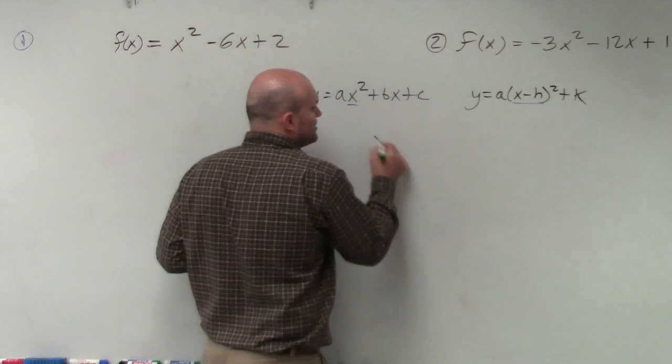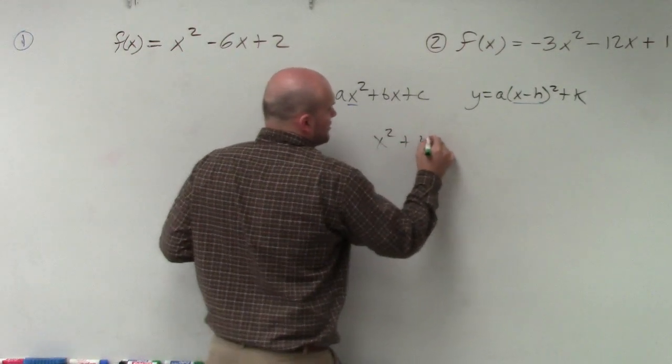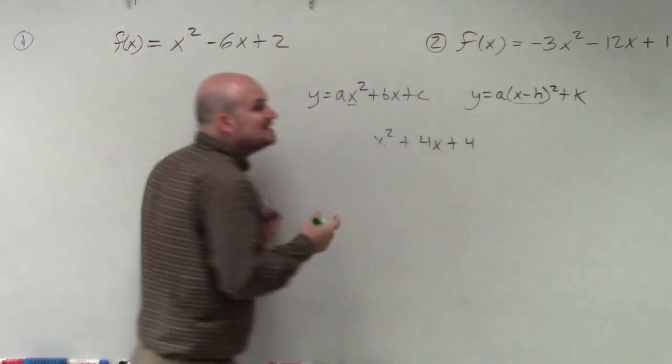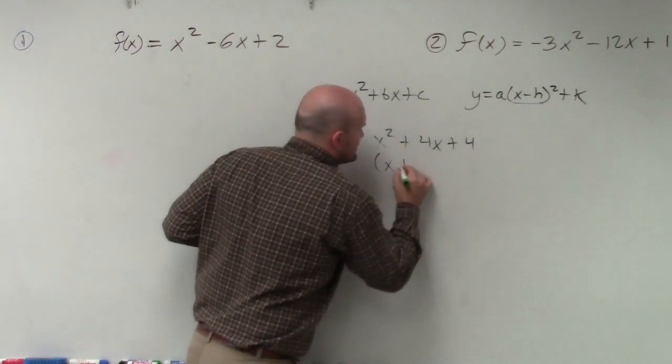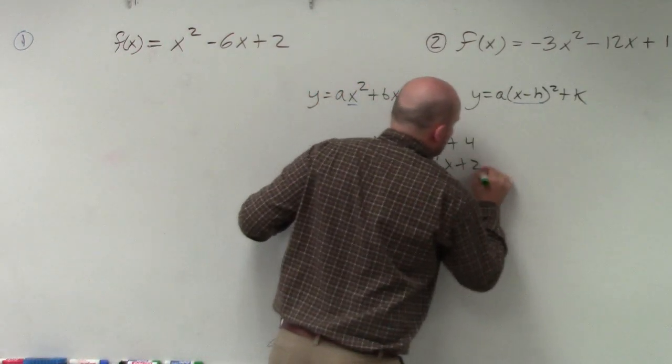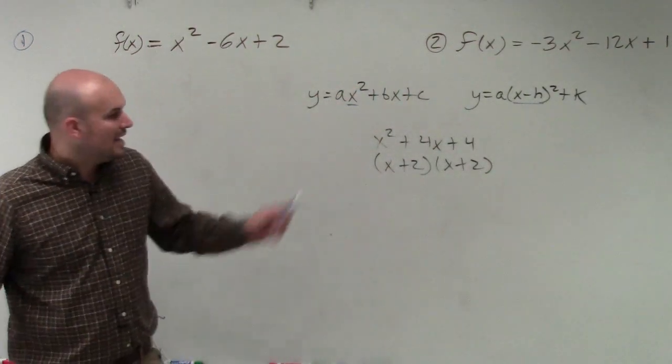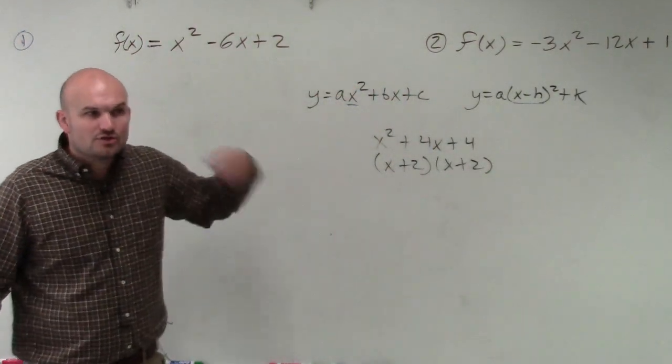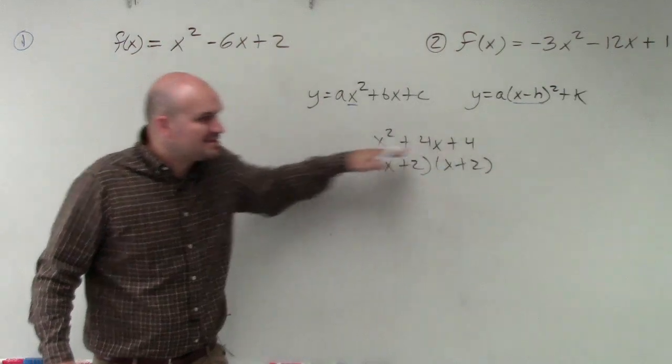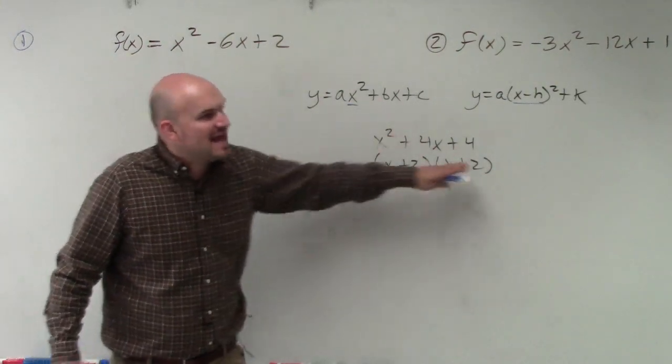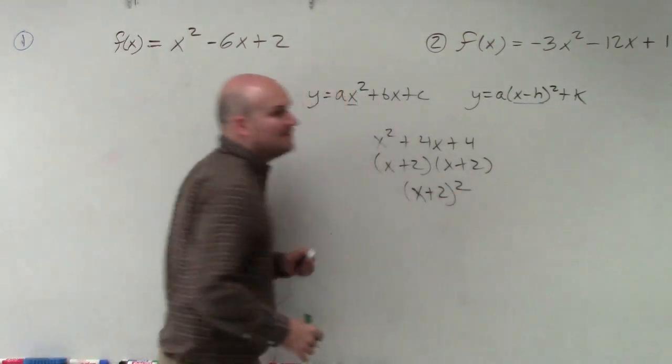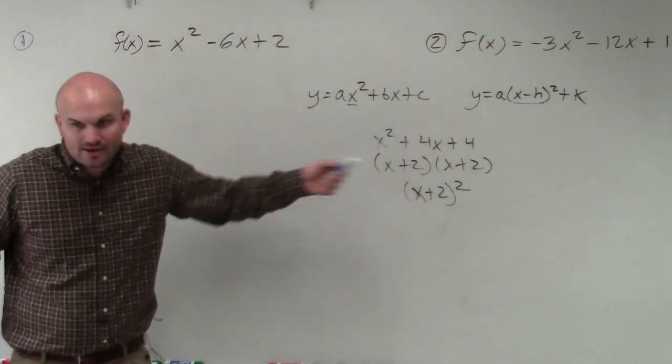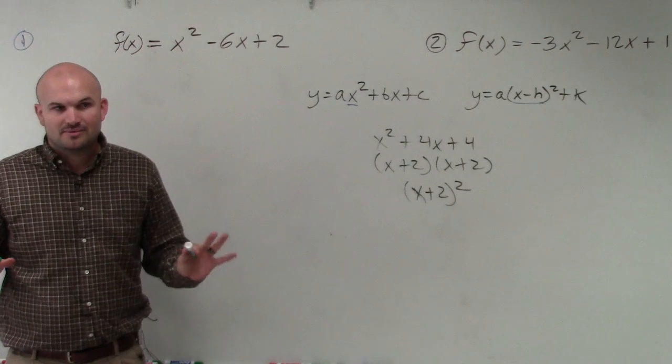Well, binomial squareds come from factoring perfect square trinomials. And if you guys remember perfect square trinomials like x squared plus 4x plus 4, that is a perfect square trinomial. Why? Because its factors are exactly the same. x plus 2 times x plus 2. Follow me a little bit?